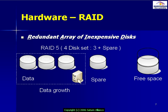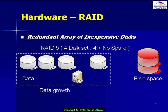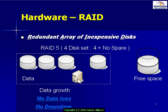This also means I can replace that failed disk at my leisure — again, no downtime, no data loss. Additionally, as user requirements grow, free space decreases. If I've got a RAID 5 set with four disks — three active and a spare — and I'm starting to run out of space, I can reconfigure the RAID array so it becomes four active disks and no spare. This gives me additional free space for my users, again with no data loss or downtime. These are some of the key advantages of a hardware RAID system.